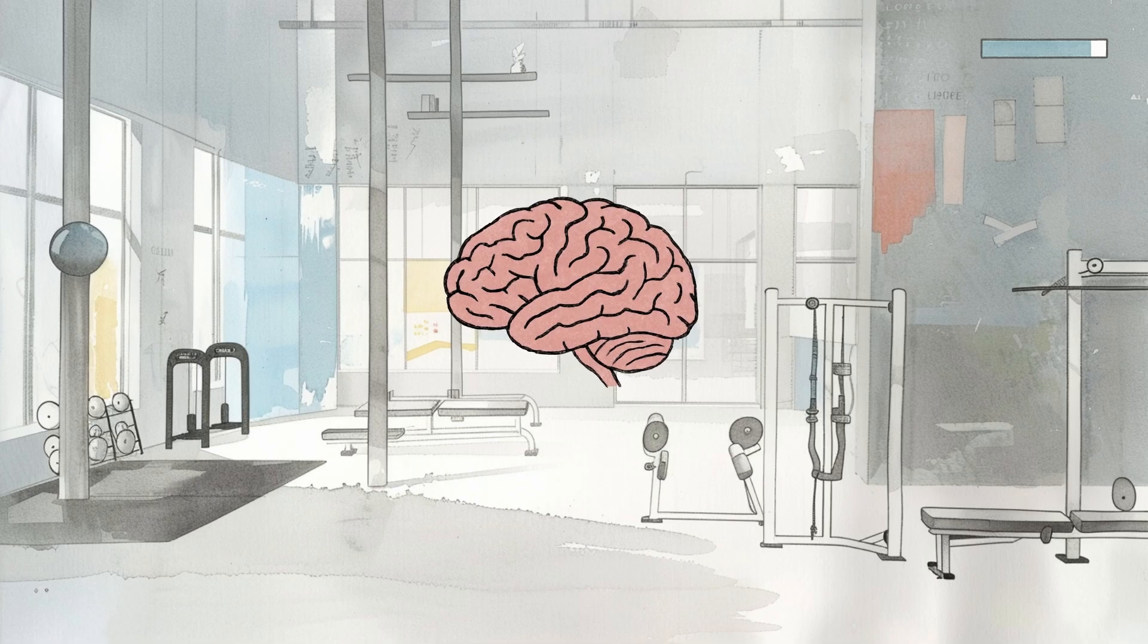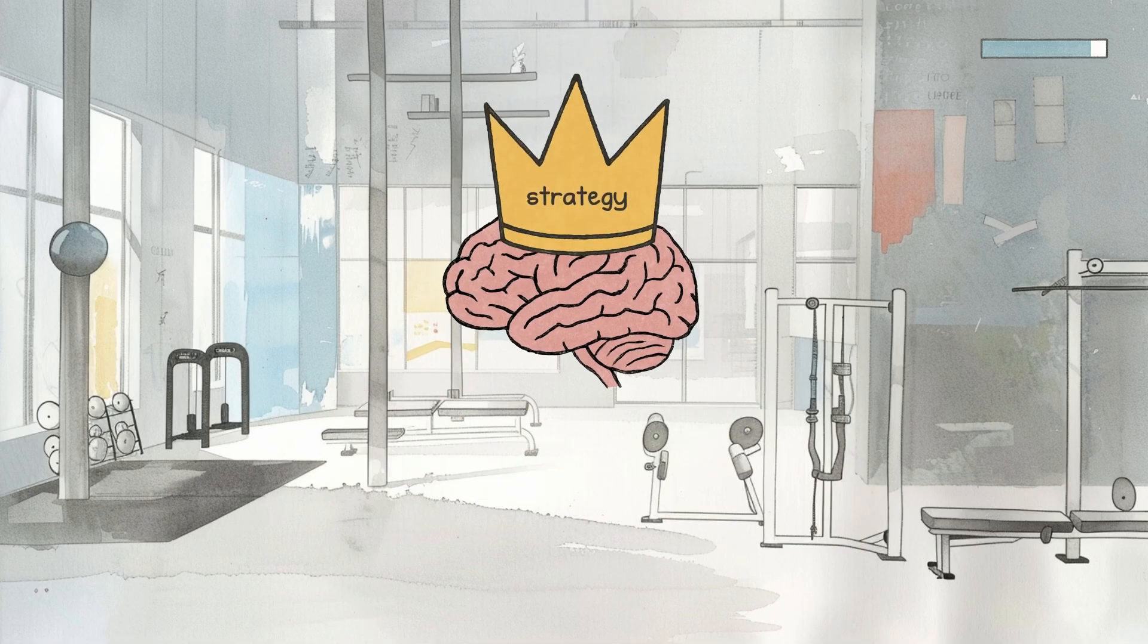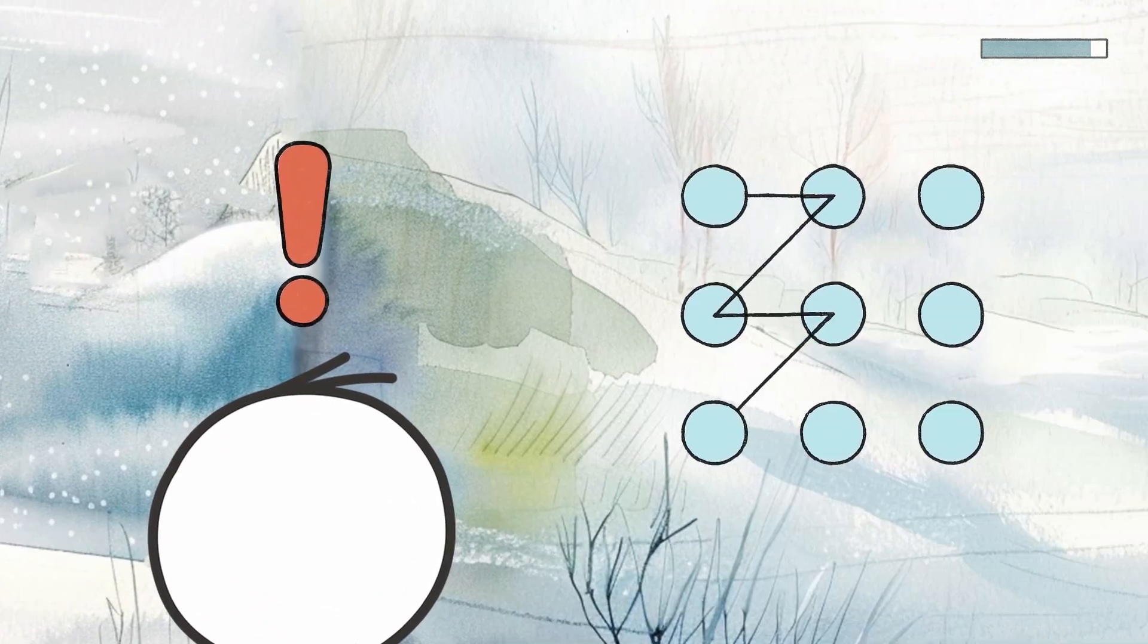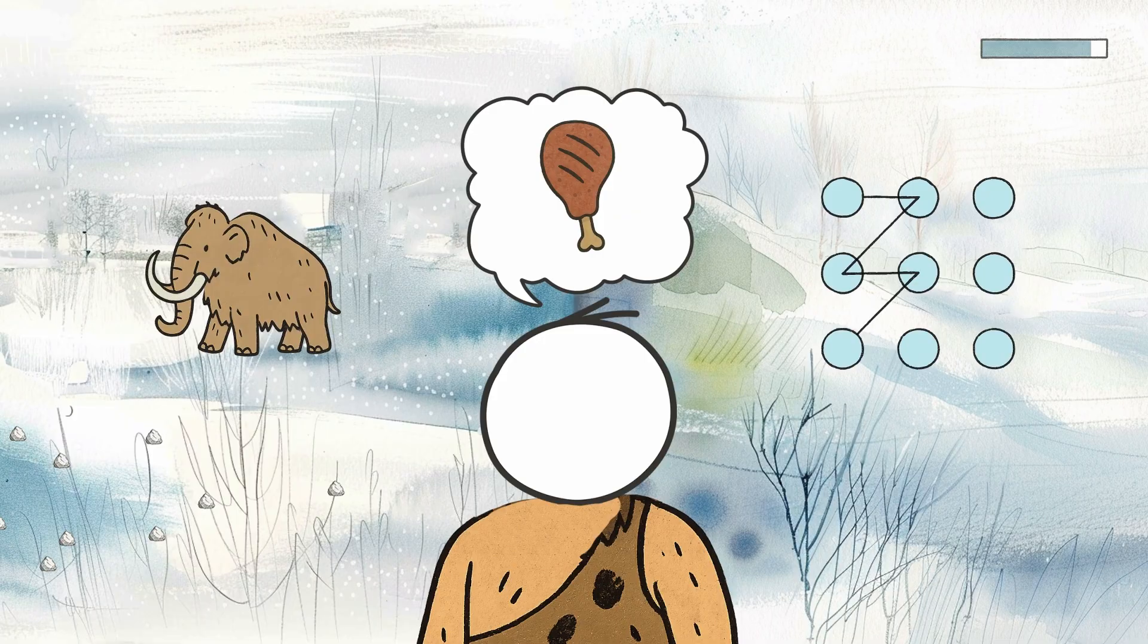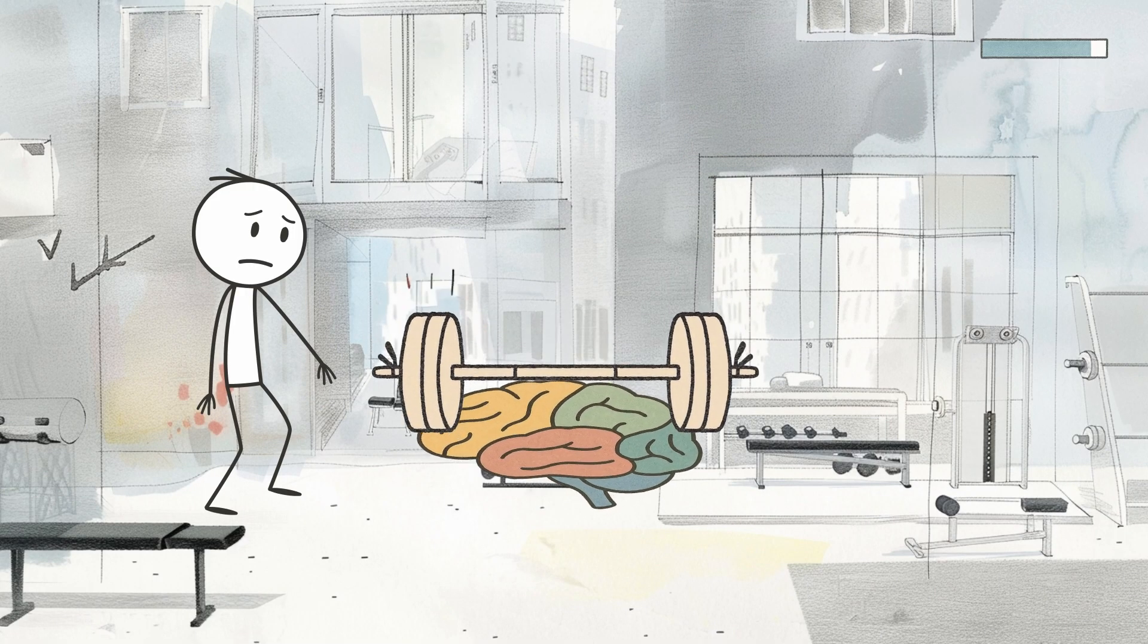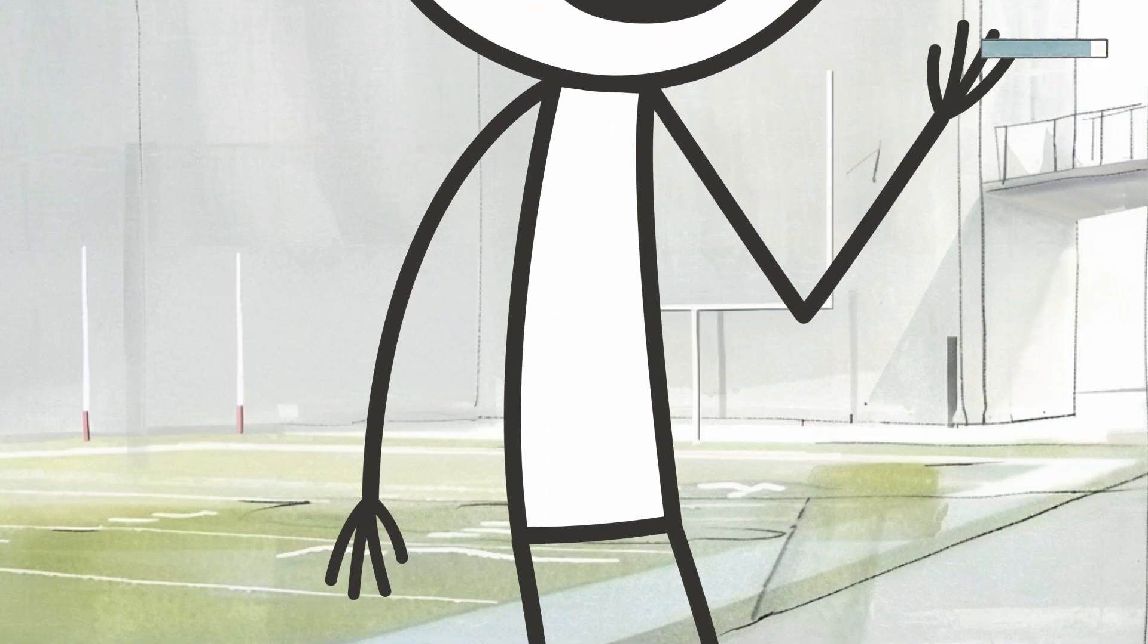From an evolutionary perspective, avoiding unnecessary mental effort was actually a smart survival strategy. When your ancestors faced a choice between hunting for food and solving abstract problems, the brain that chose hunting was more likely to survive. Mental energy was precious, and wasting it on non-essential tasks could literally be fatal. This evolutionary wiring still runs deep in your neural circuitry today.